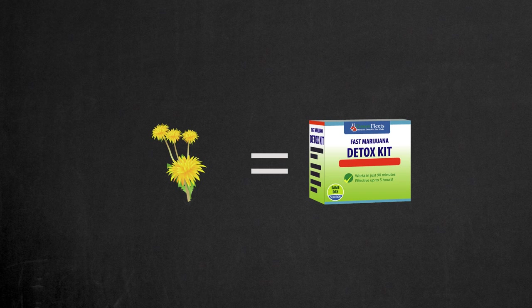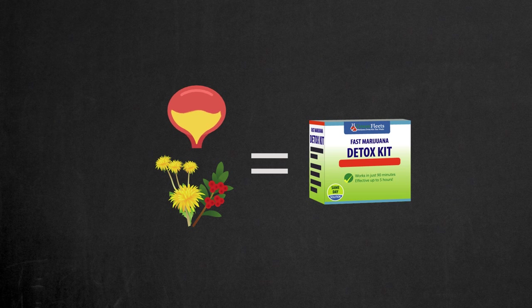Dandelion root, uva ursi and other. These are diuretics. They make you urinate frequently and flush THC metabolites from the bladder.